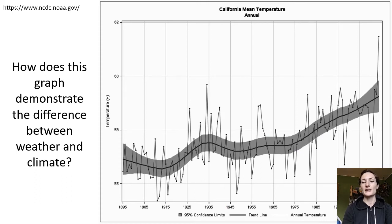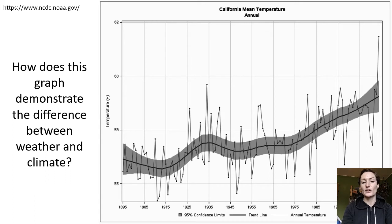Here we have a graph of California mean temperature. The x-axis is time and the y-axis on the left is temperature in Fahrenheit. There's a lighter black line that oscillates up and down, representing our actual weather measurements — each dot on that line represents a temperature measurement at a particular time. We can plot those over a long period of at least 30 years; here we have at least 100 years. The weather oscillates and changes a lot, so it'd be hard to draw conclusions between, say, 1950 and 1960.